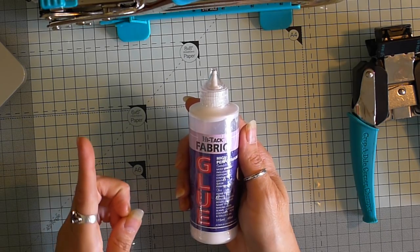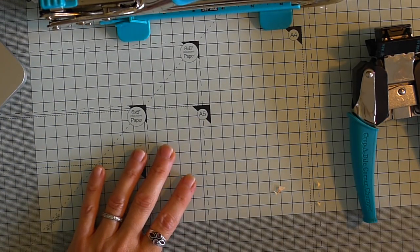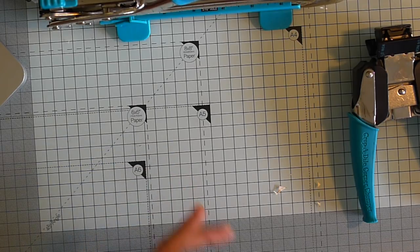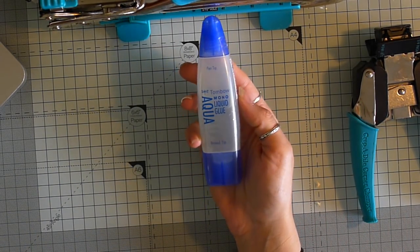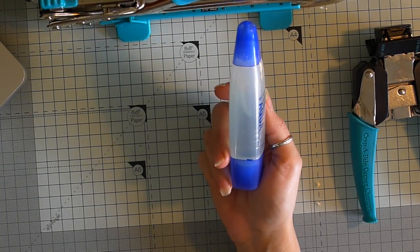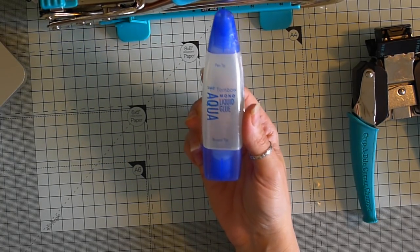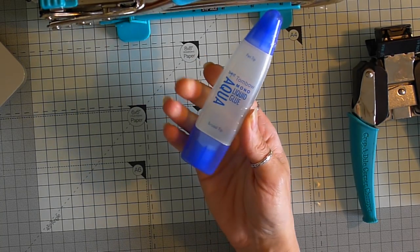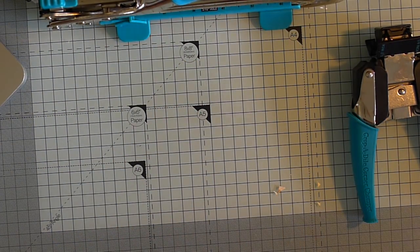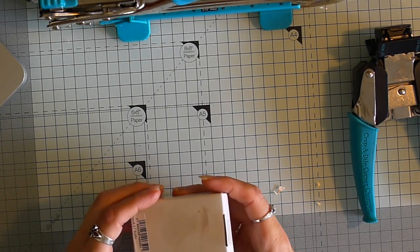I do use Mod Podge if I am decoupaging napkins and I usually water it down very slightly. The other thing about glue is I have tried the Tombow aqua glue. It's okay on thicker card but I find it just buckles. It's very wet and I just can't get on with it.